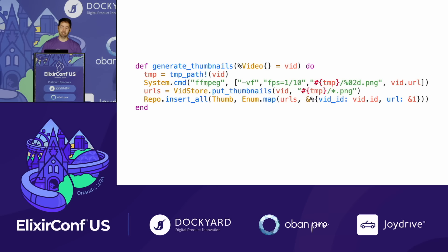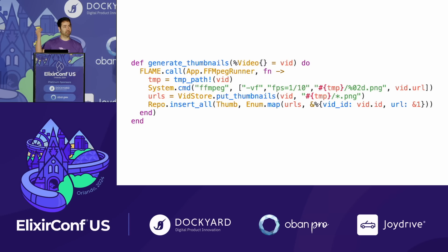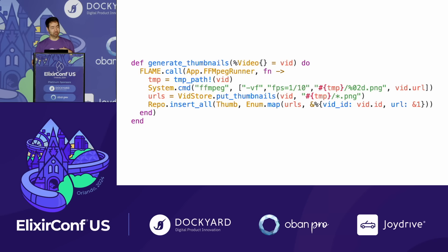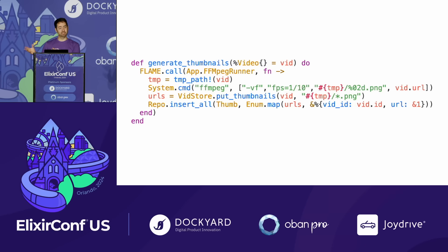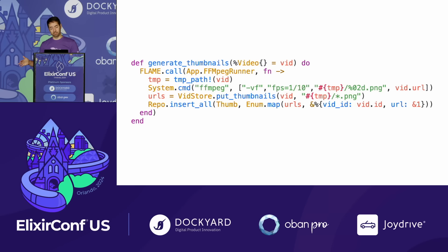FLAME lets you treat elastic scale like Task.async. When you want concurrency in Elixir you use Task.async — put your code in a function and it's running concurrently. FLAME has the same ease of mind: take that code, put it in a flame call, and now it's running concurrently on another server in a fleeting way. It comes up, does the work, returns the result to the caller. You can do database inserts, pub/sub — because it's running your whole application.